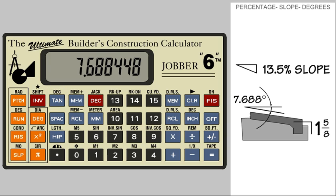This is the degree of slope for our ramp. To convert this decimal degree to a degree, minutes, and seconds degree, we press the invert key and the recall key that has the letters DMS printed above it, which stands for degrees, minutes, seconds.